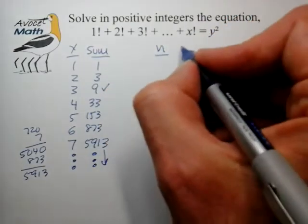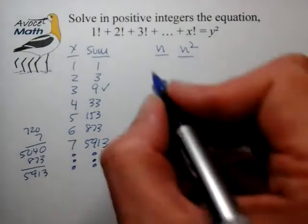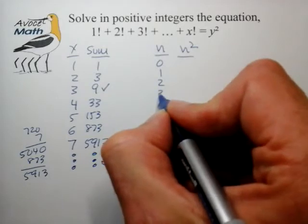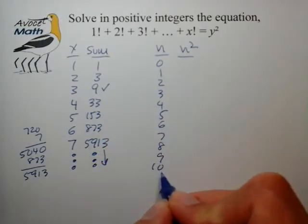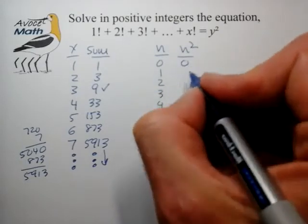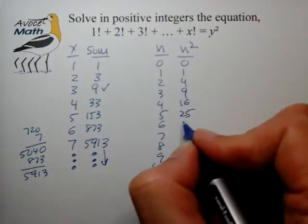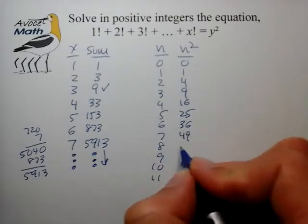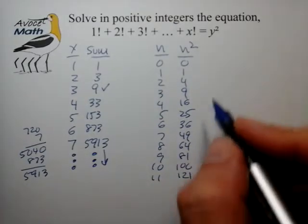We'll look at n versus n squared and see if we can see some kind of pattern in the units digit perhaps. So n is 0, 1, 2, 3, 4, 5, 6, 7, 9, 10 or maybe 11, and the square is pretty easy to list out.